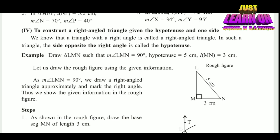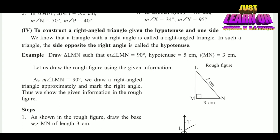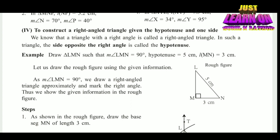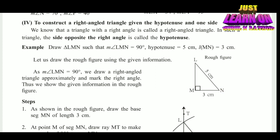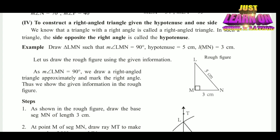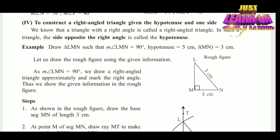Here we are to construct a right-angled triangle given the hypotenuse and one side. You can use a compass or pencil consisting of a triangle. We know that a triangle with a right angle is called a right-angled triangle.